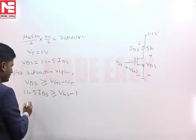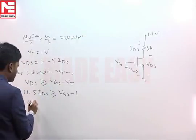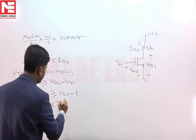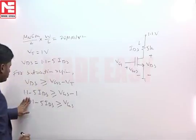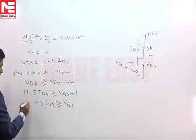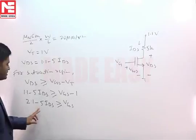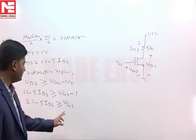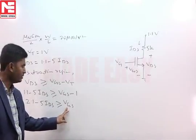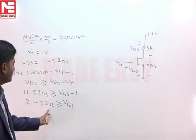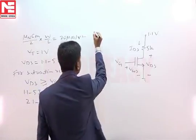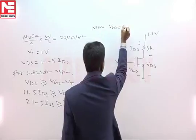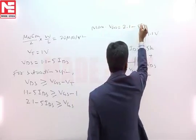If you rearrange it, it will become 0.1 minus 5 IDS greater than or equal to VGS. It will become 2.1, that minus 1 came here. 2.1 minus 5 IDS more than or equal to VGS, or you can say from here that VGS can be at most equal to 2.1 minus 5 IDS. Maximum VGS is equal to 2.1 minus 5 IDS.